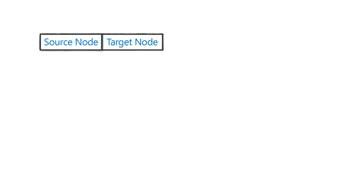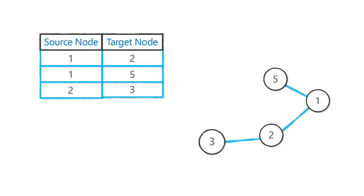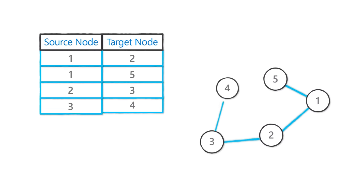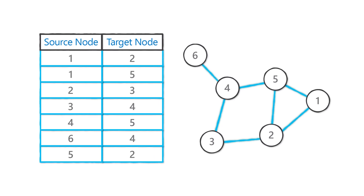One of the first steps in understanding how an organizational network works is to look at the underlying data structures that support it. The data structure we use to understand organization is called a graph or a network. On the left-hand side of this slide is a list of what are called edges, which gives you a source node and a target node and denotes that the two are connected. On the right-hand side, we can see a visual depiction of this edge list representing the corresponding graph.